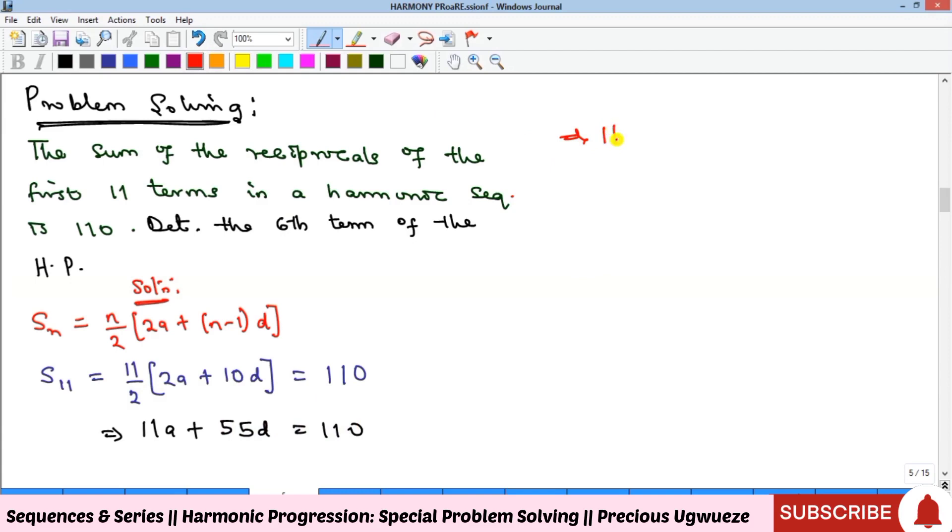If we factorize 11 from that equation and divide both sides by 11, we get a + 5d = 10. Now let's look at what the question is actually asking.